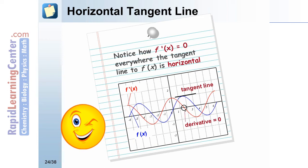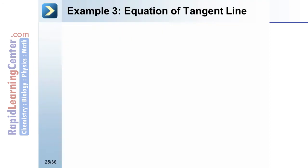Wherever the derivative cos(x) equals zero, the tangent line to f(x) = sin(x) is horizontal. So whenever we have a horizontal tangent line on the original function, the value of the derivative is zero at that point. We are now ready to look at a third example: finding the equation of a tangent line.